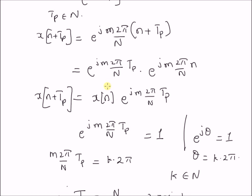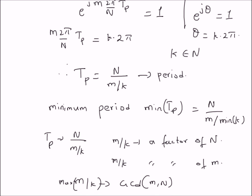So in order to derive the period of a signal, all you have to do is equate the value of the signal at n + Tp to the signal x(n). Then the exponential factor must equal 1, and from that equation we can derive the values of the period and its minimum possible value. Thanks for watching.